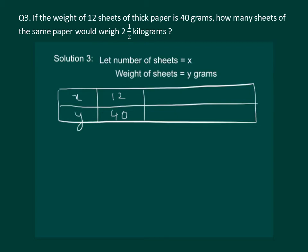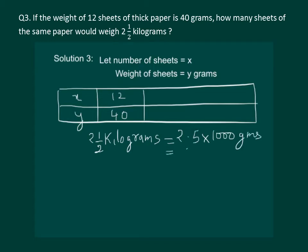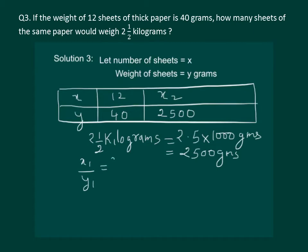First thing is to calculate the weight in terms of grams — that means 2.5 kilograms is equal to 2.5 into 1000 grams, which is equal to 2500 grams. And we have to find x2.